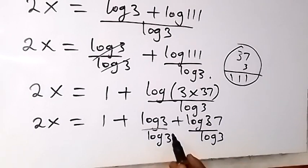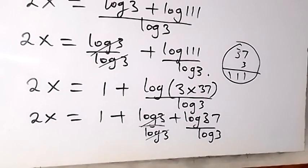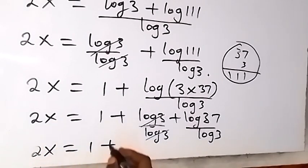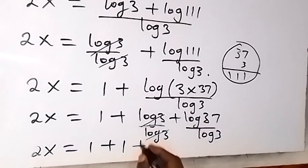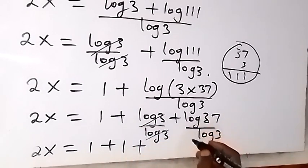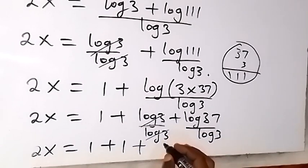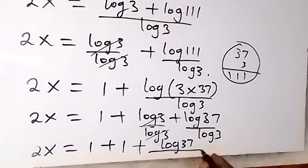Also here, log 3, we cancel each other, it will be 1 here. And therefore, we can write here as 2x will then be equal to 1 plus 1. This is also 1 plus, I can rewrite this and say this will be log 37 over log 3.